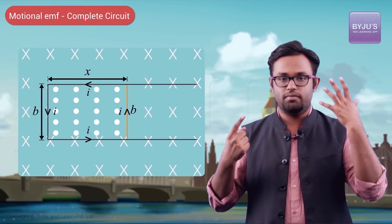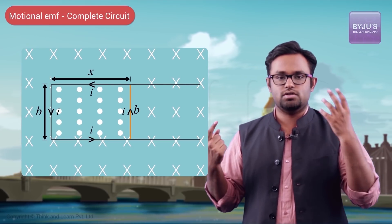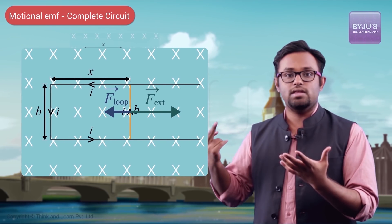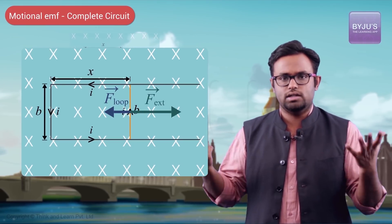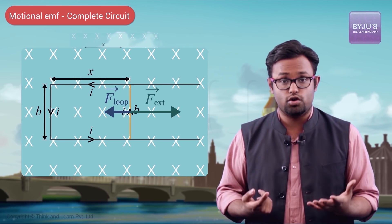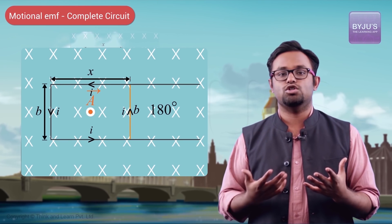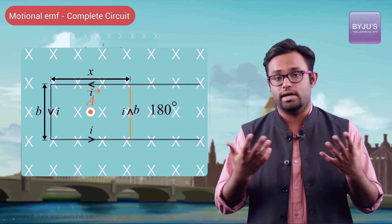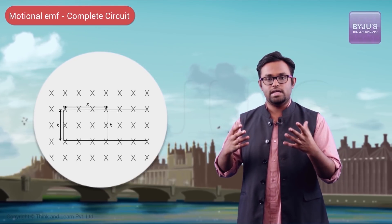So in cases where the area changes, we have three methods. First, the original Lenz's law approach where the loop chooses a direction based on opposing flux change. Second, consider the force generated in the movable limb — it opposes the motion applied by the external agent. Third, go completely mathematical: assume a direction of current and check whether the final answer is positive or negative. Any situation with a movable limb, or more precisely a relative motion between a conductor and the source of the magnetic field, is called motional EMF.